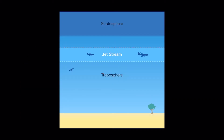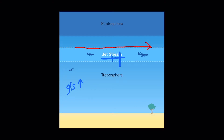Jet streams are observed in the mid to upper tropospheric levels, and our aircraft also fly in this region, so these jet streams affect the ground speed of aircraft. For example, if a jet stream is moving from west to east and an aircraft is flying in the same direction towards the east, the ground speed of that aircraft will increase, so it will travel faster and reach its destination early.